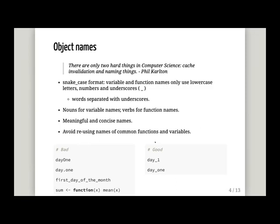Let's start with object names. Object names in Tidyverse adhere to the snake case format — you only use lowercase letters, numbers, and underscores, and you separate words with underscores. You don't separate words with capital letters, as some other styles do, nor with dots. You use nouns for variable names and verbs for function names. You try to come up with meaningful and concise names — for example, instead of 'first day of the month,' something like 'day one' would be just as suitable, although these names are surprisingly hard to come up with. It's also a good idea to avoid reusing names of common functions and variables — if you have a function that calculates mean, it's probably not a good idea to call it 'sum'.